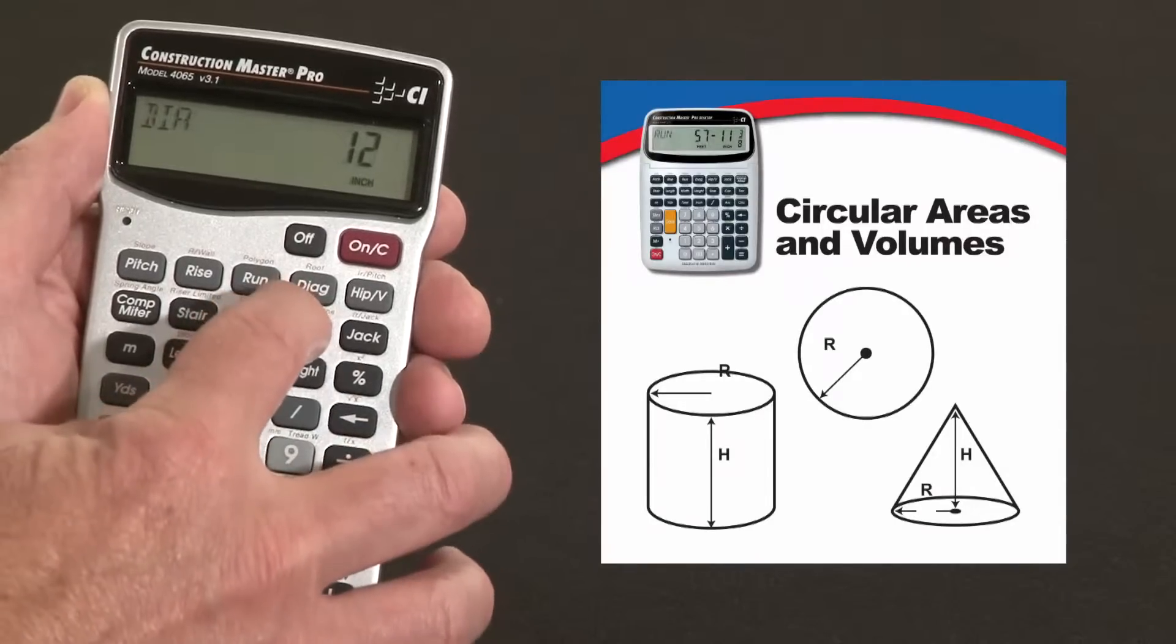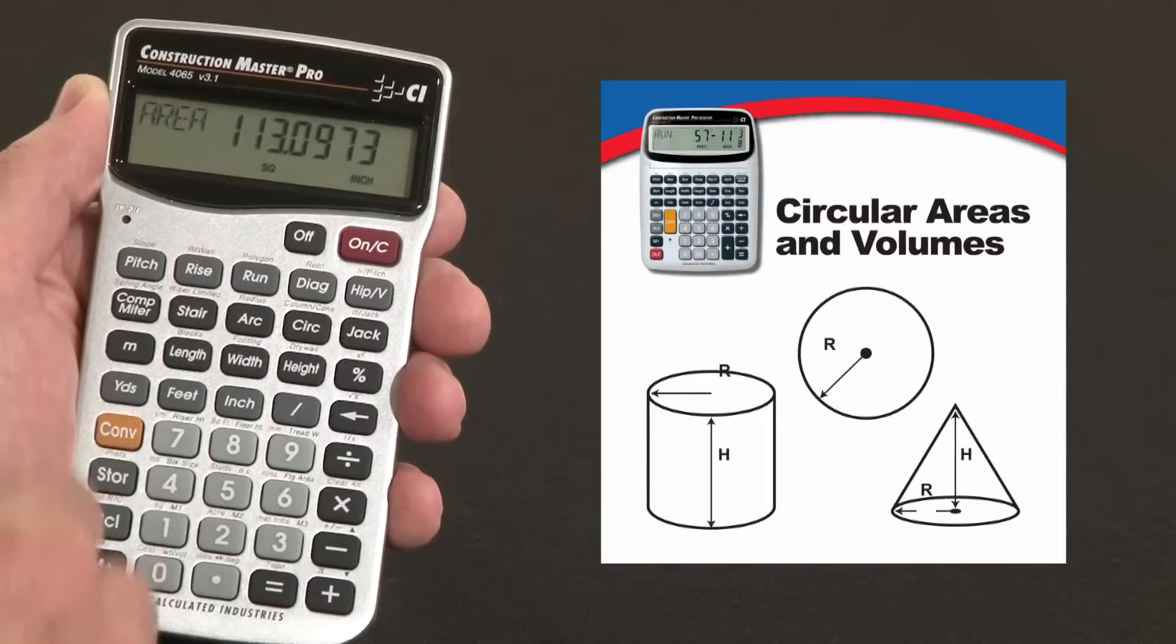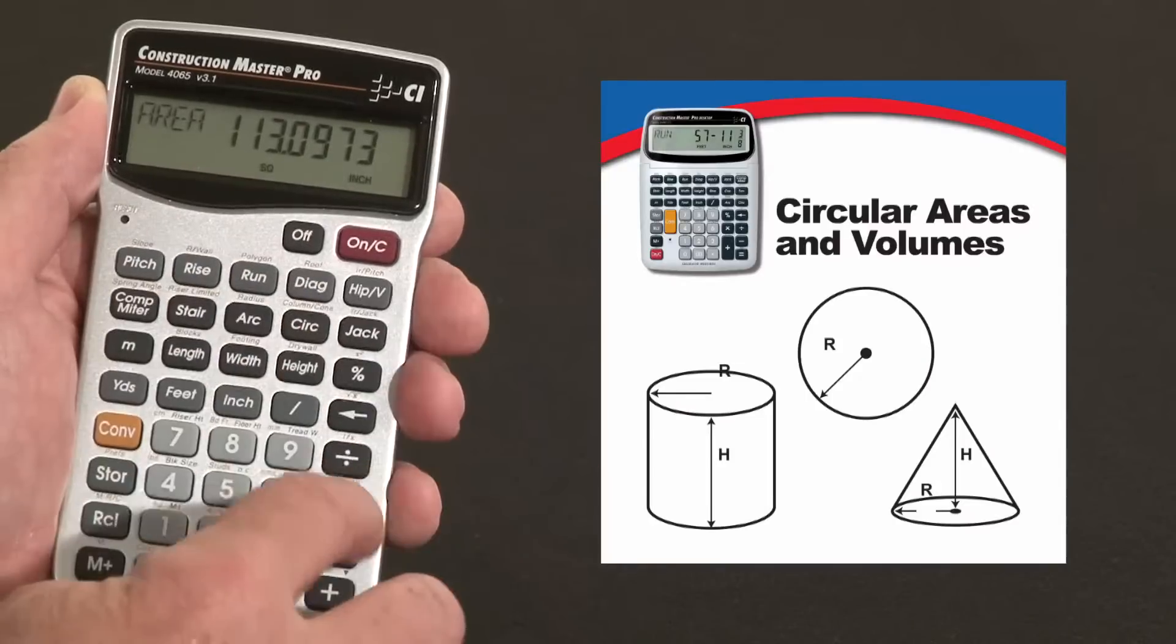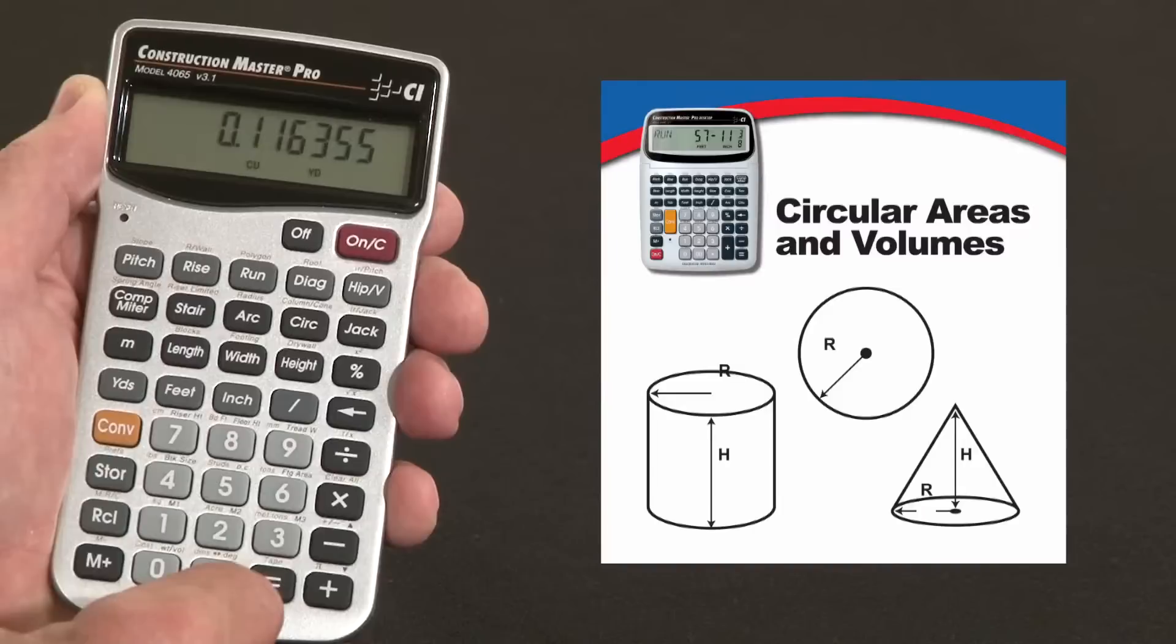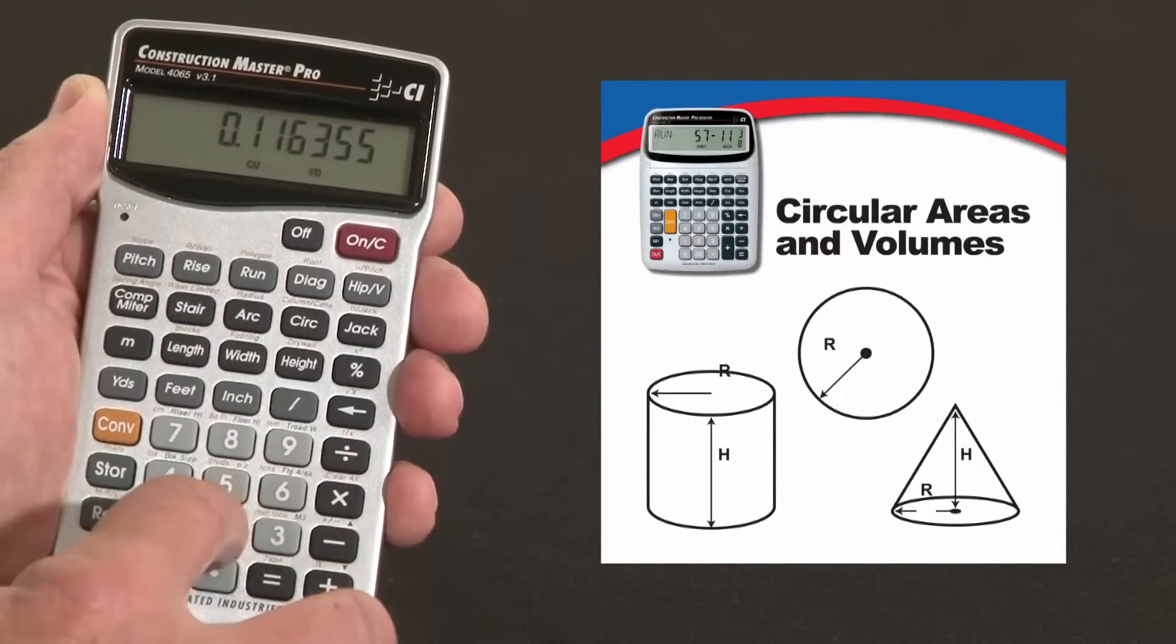So say we want to, let me go back through that cycle there. Diameter is 12 inches. Say we want to do a 12 inch diameter sonotube, 4 feet high. So this square inch times 4 feet equals 0.1 cubic yards, and maybe I have 20 of them underneath my deck.